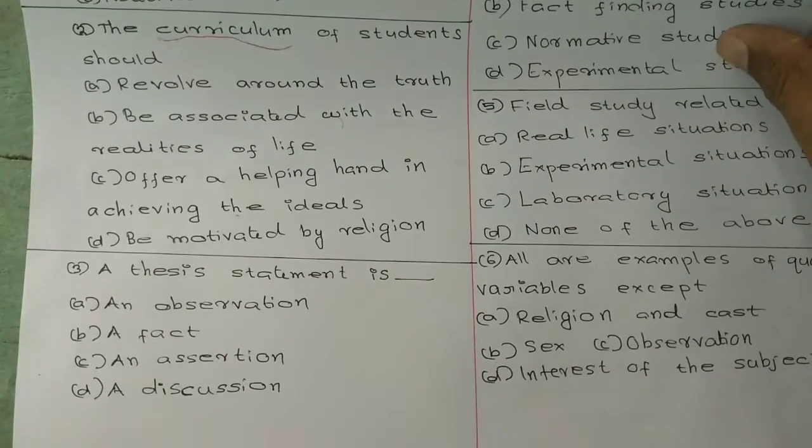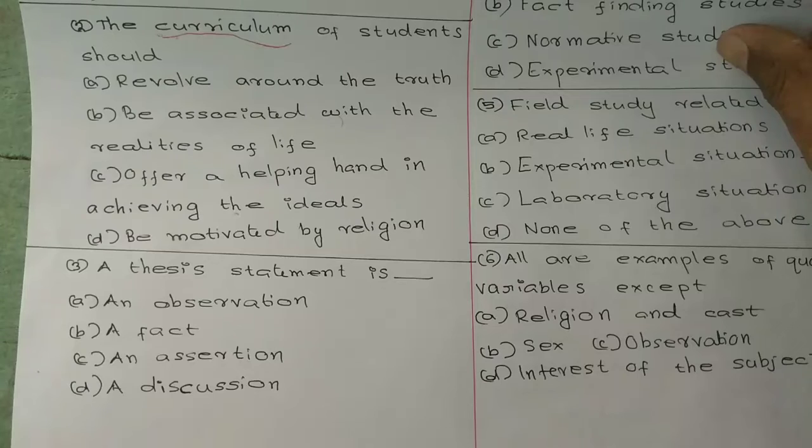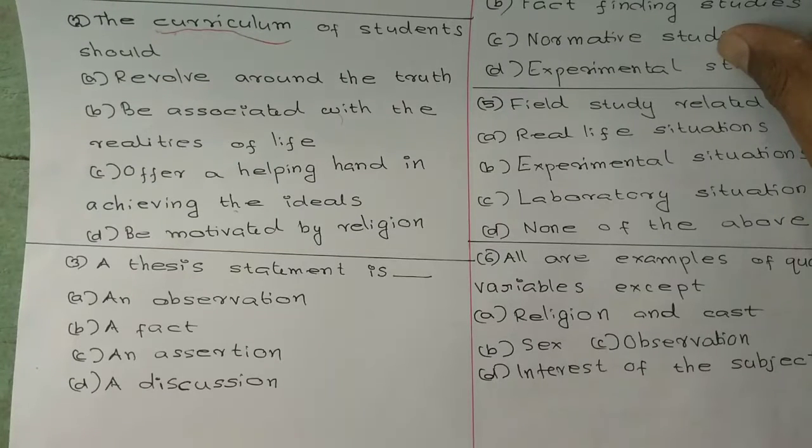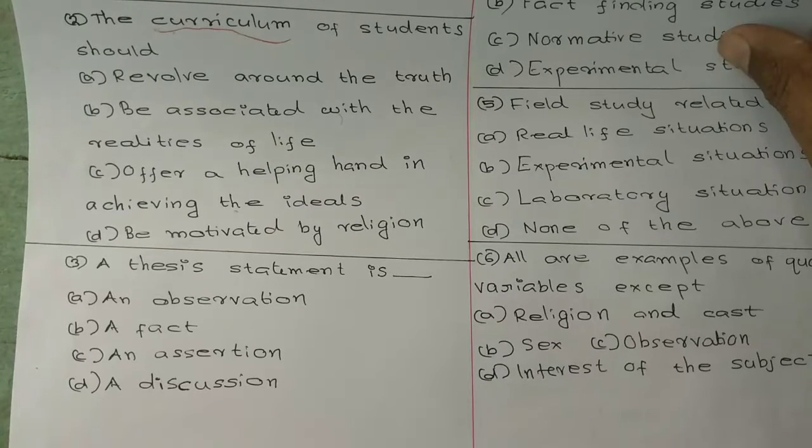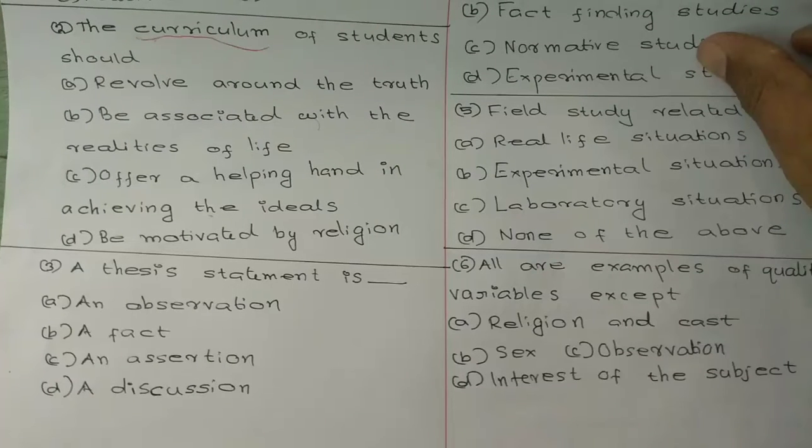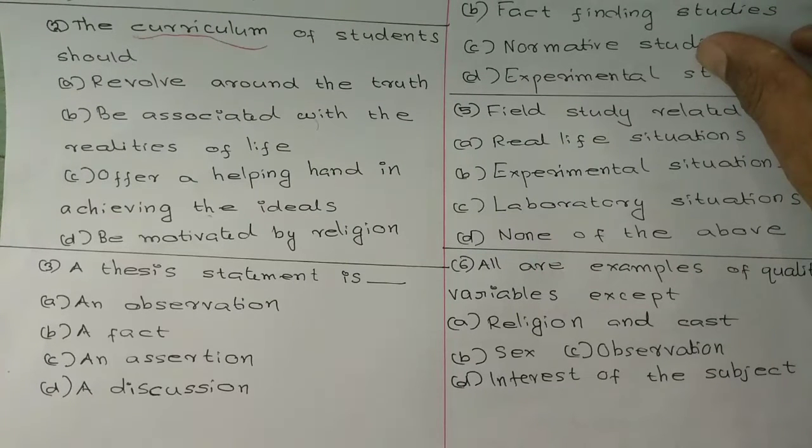Question 3: A thesis statement is. Option A: an observation. Option B: a fact. Option C: an assertion. Option D: a discussion.